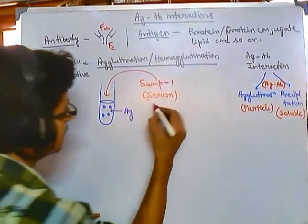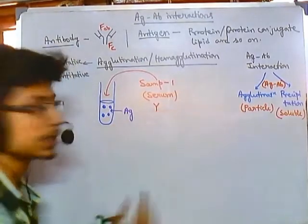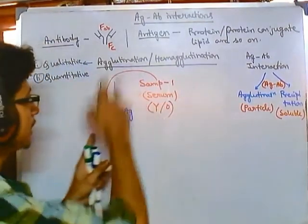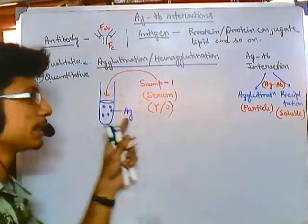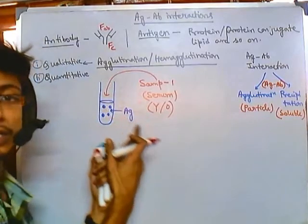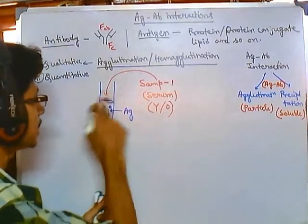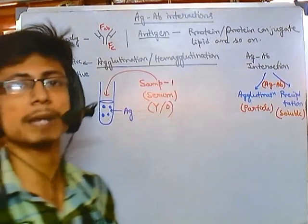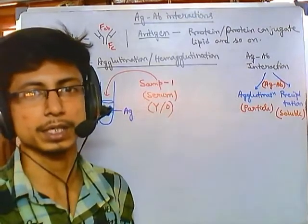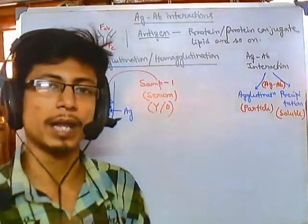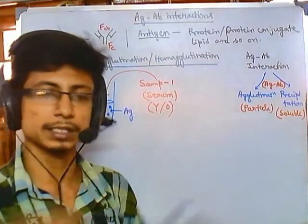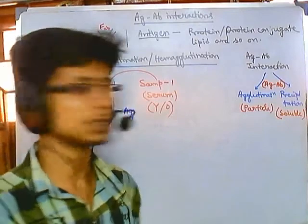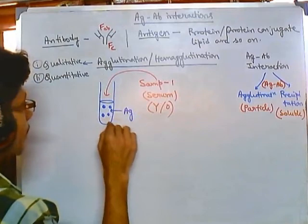Our hypothesis is that the serum can carry antibody or it cannot carry any antibody. If it carries the antibody, then the antibody will agglutinate the antigen and we can see the agglutination easily. In the case of blood agglutination, the red blood cells will start to clump all together — they agglutinate and adhere together — so we can easily observe this process.